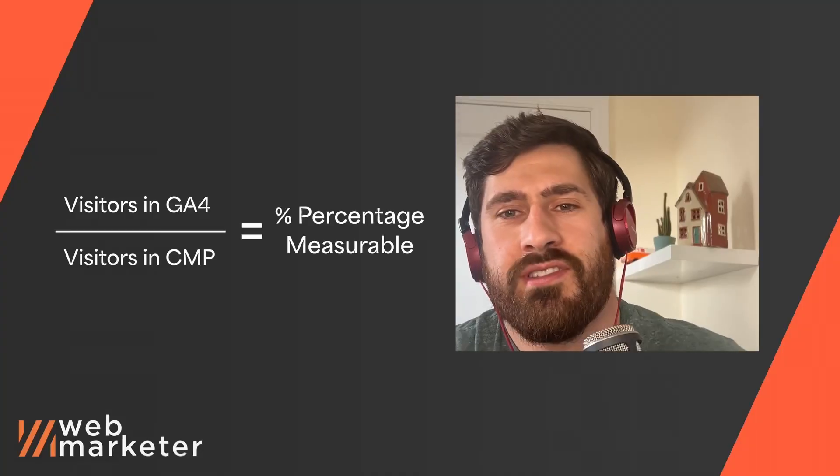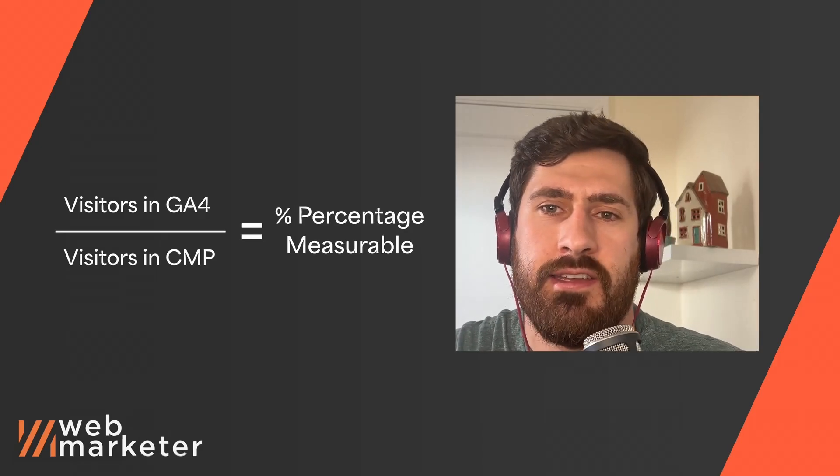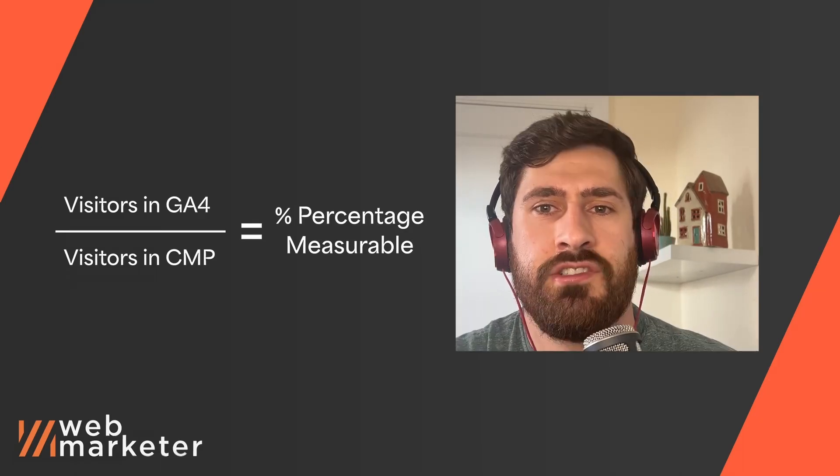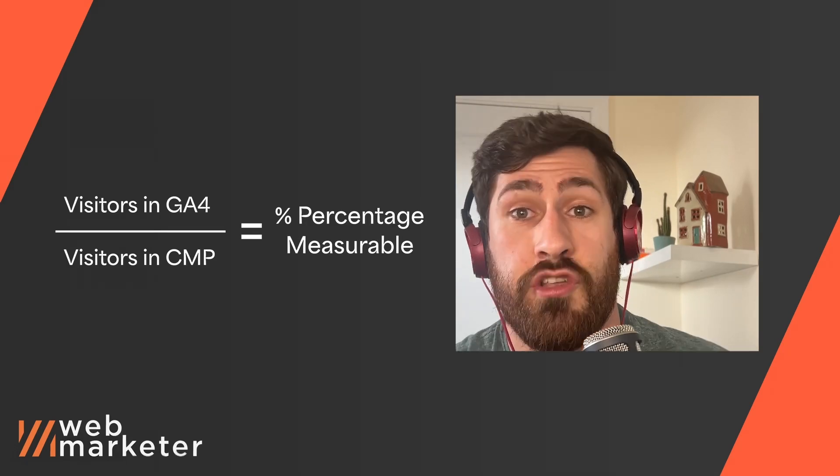Another recommendation is to figure out exactly how much data you're losing from your cookie banner. At the top of the episode we mentioned that up to 80% of your conversions might be going untracked, but the actual percentage is different for everyone. Consent Management Platforms, or CMPs, create the cookie banners and pass consent to Google. Lots of CMPs will show you how many people visited your website and how many accepted or denied cookies. For CMPs that don't, take the number of visitors in Google Analytics and divide by the number of visits showing in your CMP — this gives you the percentage of visitors you're able to measure.